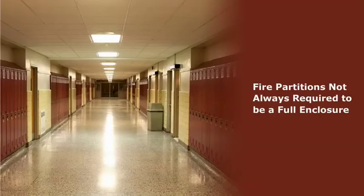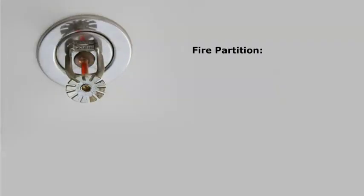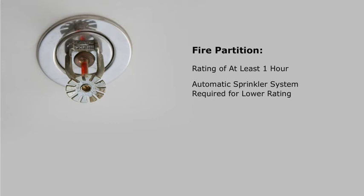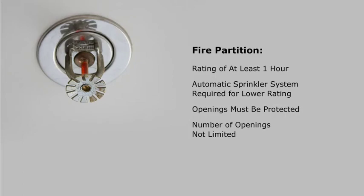A fire partition separates one area from another but is not always required to be a full enclosure. The floor and ceiling assemblies typically need to have the same rating, but when used to separate tenant spaces in malls, dwelling units, sleeping areas, corridors, or certain construction types, they do not. A fire partition usually has a rating of at least one hour, though corridor walls and walls between dwelling and sleeping units are allowed to have a lower rating, often requiring an automatic sprinkler system. Like fire barriers, openings in fire partitions are required to be protected, although the number of openings is not limited.